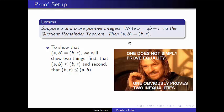This is a very common tactic. It's one that you may have seen previously when you were showing the equality of sets. Show that set A is a subset of set B, and then show that set B is a subset of set A. We'll first show that the GCD of A and B is less than or equal to the GCD of B and R, and then we will show the reverse inequality.